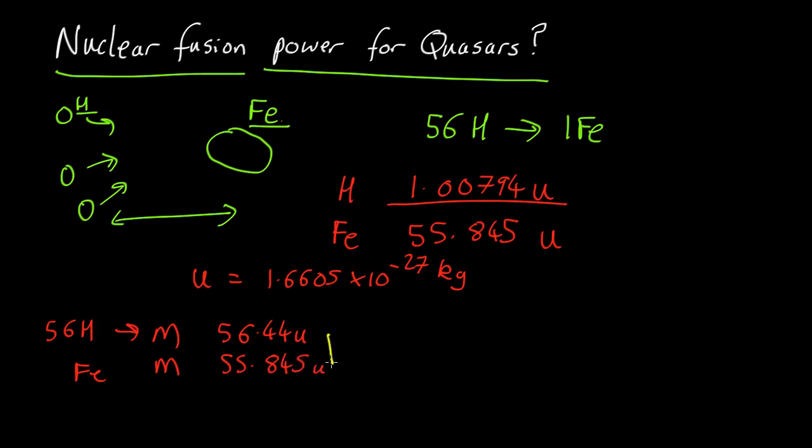So the mass of 56 hydrogen is 56.44 atomic mass units, whereas iron has a mass of 55.845. Subtract them. The difference, the change in mass, is 0.6 atomic mass units. So about 1%. So when we combine 56 hydrogens to make one iron, the final result is actually only 99% of that.